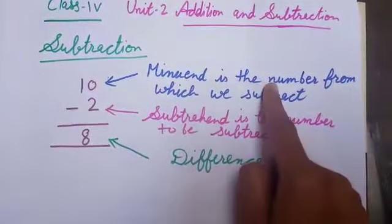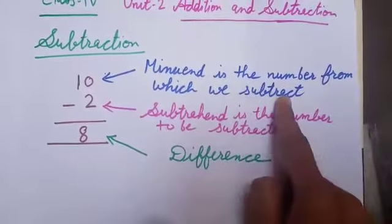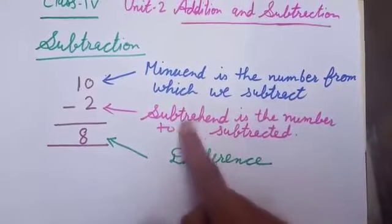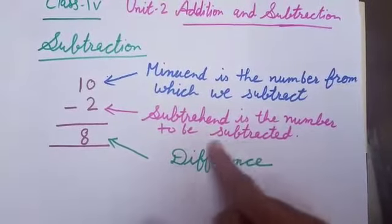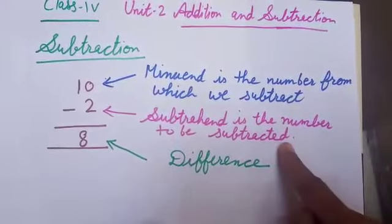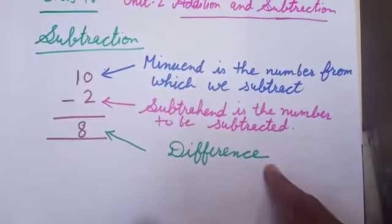Minuend is the number from which we subtract. Subtrahend is the number to be subtracted. And the subtraction result is called difference.